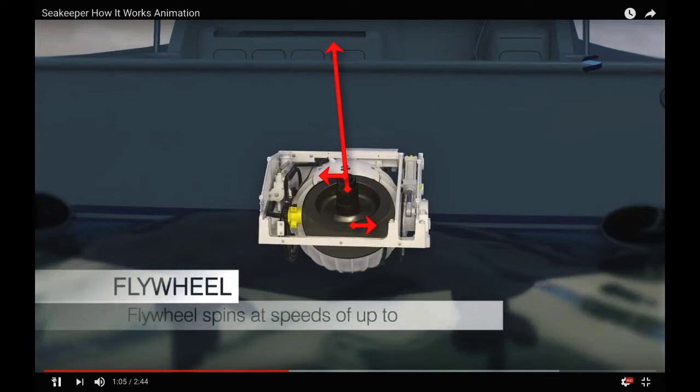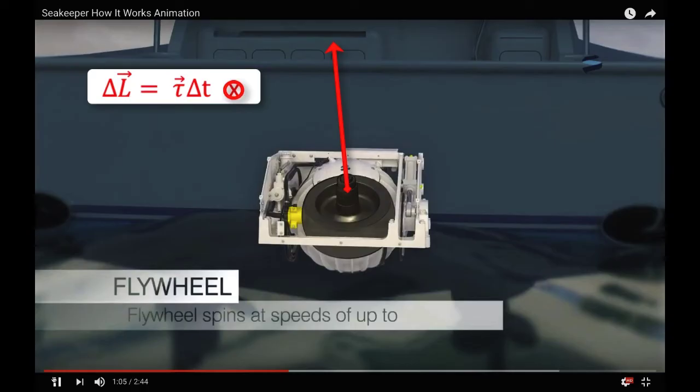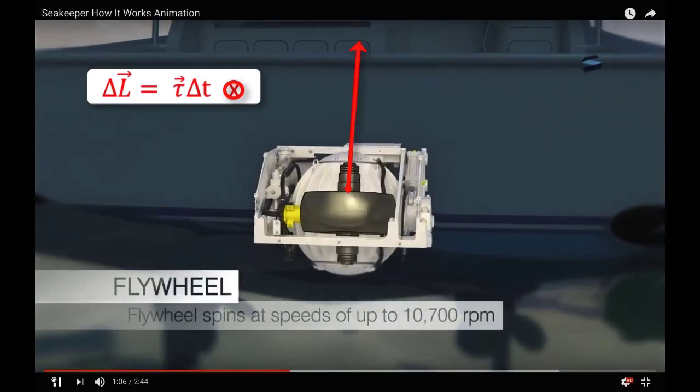The angular momentum of the gyroscope is upwards. This wave is providing a torque into the board as shown, away from us, providing an angular impulse that only changes the gyroscope's orientation by a small amount.